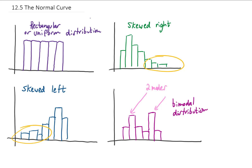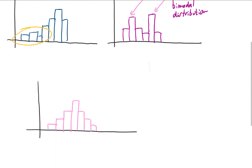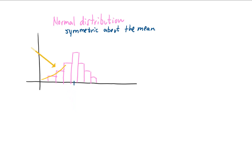The type of distribution that we're going to be talking about for the rest of this video is called a normal distribution, and a normal distribution looks something like this. A normal distribution has a mean right in the middle, and the distribution is symmetric about that mean. It also turns out that for a normal distribution, the mean, the median, and the mode are all right here in the middle at the same value.